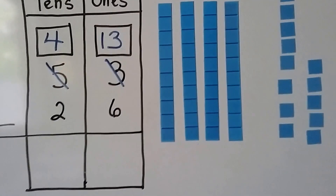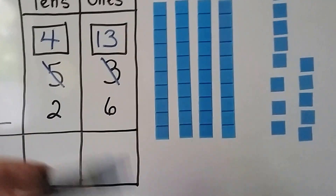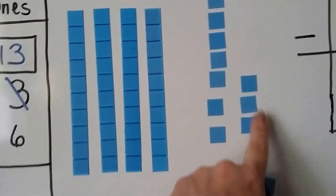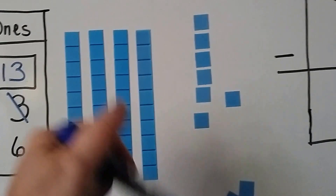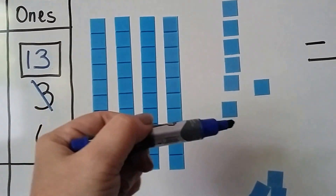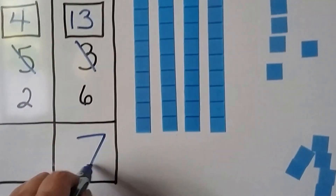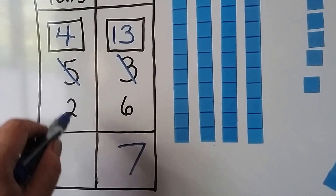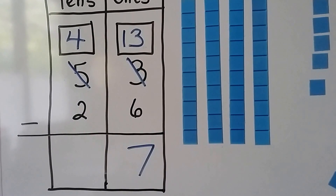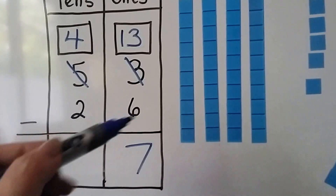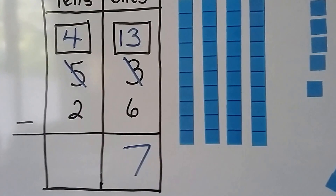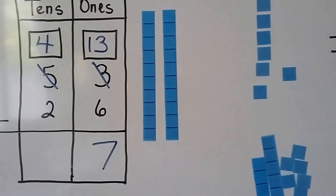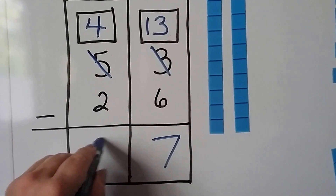Now we can do our subtraction: 13 minus 6. We take 6 of the ones away, and that's going to leave 7 ones and 4 tens. But we need to take 2 tens away, because it's 53 minus 26 — we still need to take away 2 tens. So let's take those away. Now we've got 2 tens left and 7 ones.